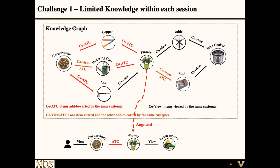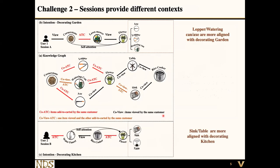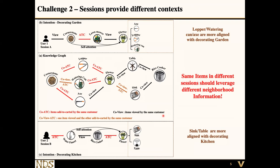However, if we directly use information from the knowledge graph — for example, taking the five neighbors of the flower — we might end up in a bad situation. Among these five neighbors, three are garden-related: the lopper, the water can, and the axe. But two are specifically for the kitchen: the table and sink. If we directly use all five neighbors to augment the flower, not all of them are going to help, because the intention of this sequence is clearly to decorate the garden. So the same item positioned in different sessions should use different neighborhood information — this motivates us to design session adaptive message passing to adaptively leverage neighborhood information.